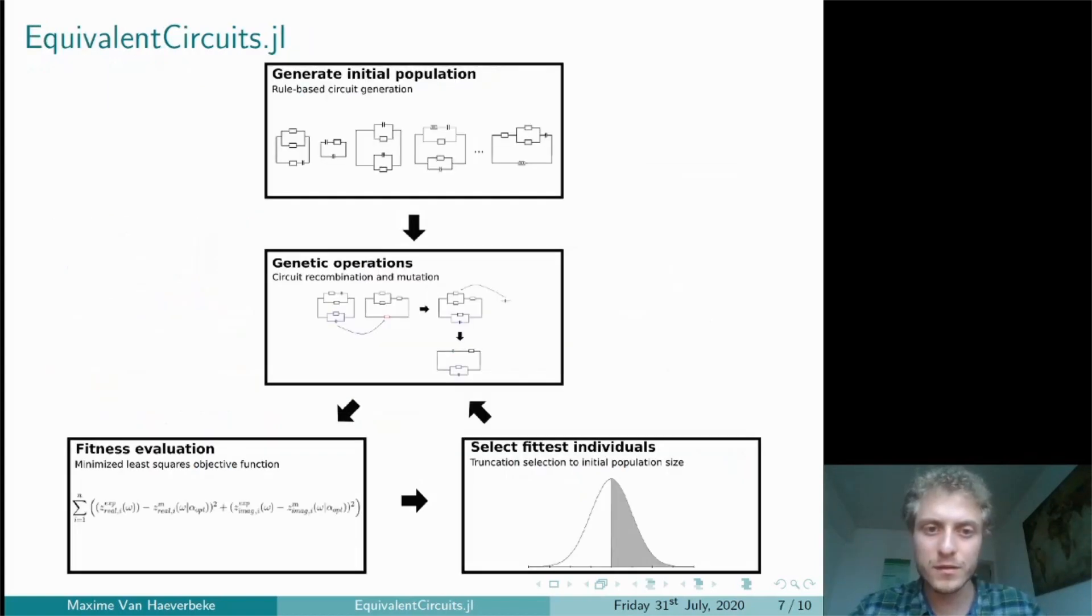In EquivalentCircuits.jl, the genetic programming algorithm is implemented as follows. First, the initial population is generated using a rule-based method. This population is then extended by the application of genetic operations. Two randomly selected individuals undergo recombination by exchanging randomly selected components or sub-circuits.